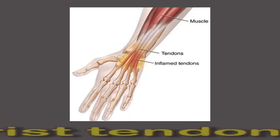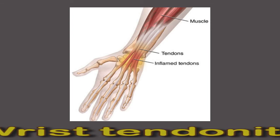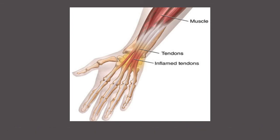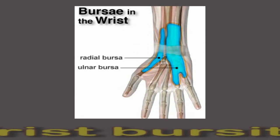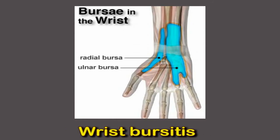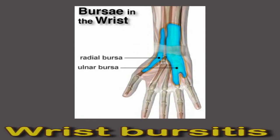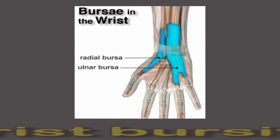Wrist tendonitis can occur when the tendons of the wrist develop small tears or become irritated and inflamed, usually due to repetitive movement. Wrist bursitis occurs when the small fluid-filled sacs that help cushion joints become inflamed. Symptoms include tenderness over the tendons of the wrist, redness in the region, and swelling.